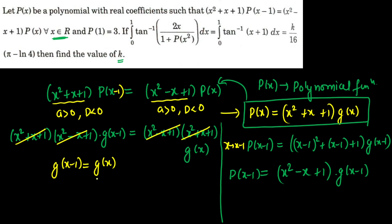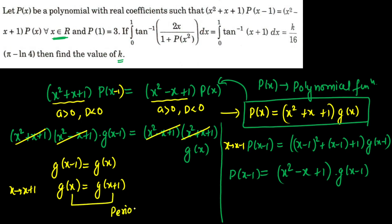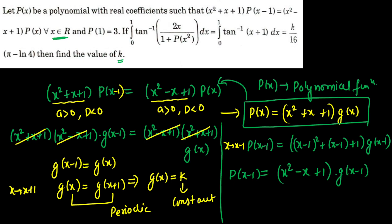This result is very important: g(x-1) = g(x). Replacing x by x+1 gives g(x) = g(x+1), meaning g is periodic with period 1. But a polynomial function that is periodic must be a constant. Therefore g(x) = k (a constant). Since P(1) = 3, substituting x=1 gives 3k = 3, so k = 1, and therefore P(x) = x²+x+1.